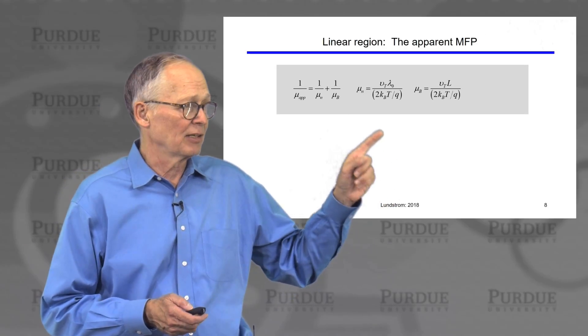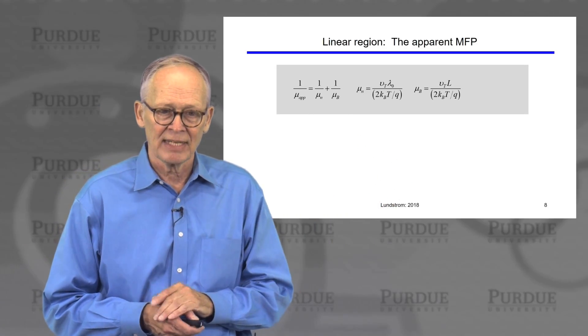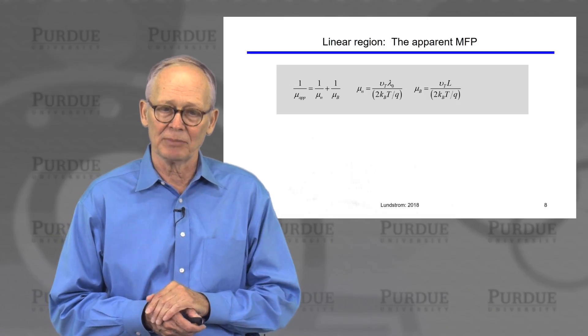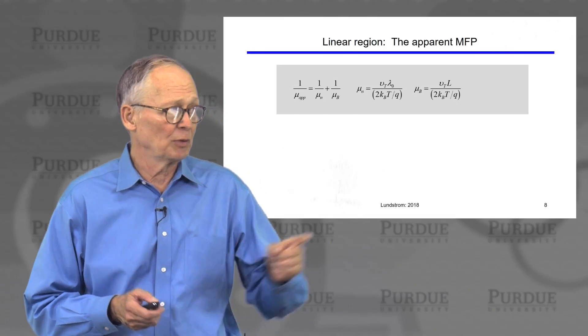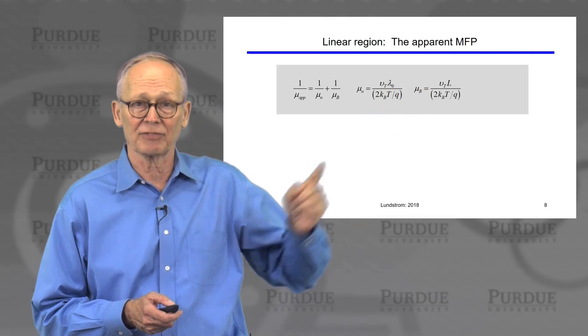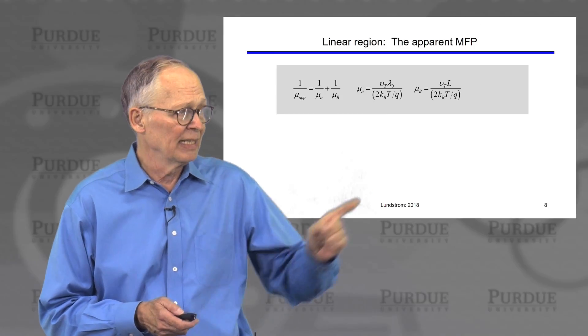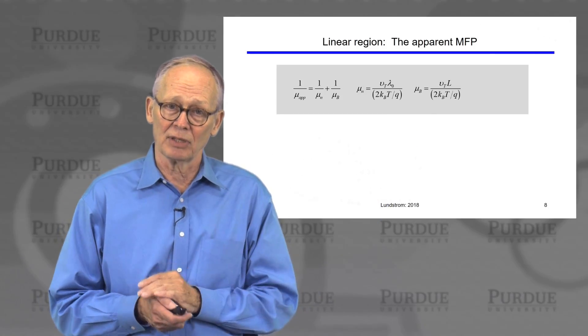So in the linear regime, it all involves an apparent mobility. And the apparent mobility is a combination of the diffusive mobility that involves the mean free path for backscattering in the bulk and the ballistic mobility, which involves the channel length.